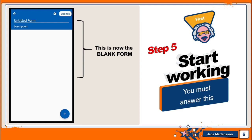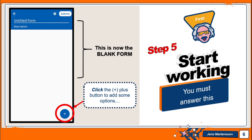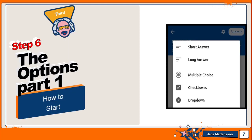Step five: when you click the plus button, you can start working on a blank form. Then click the plus button again to add some options. Step six — these are the options you can see after clicking the plus button: short answer, long answer, multiple choice, checkboxes, and dropdown. This is just part one.